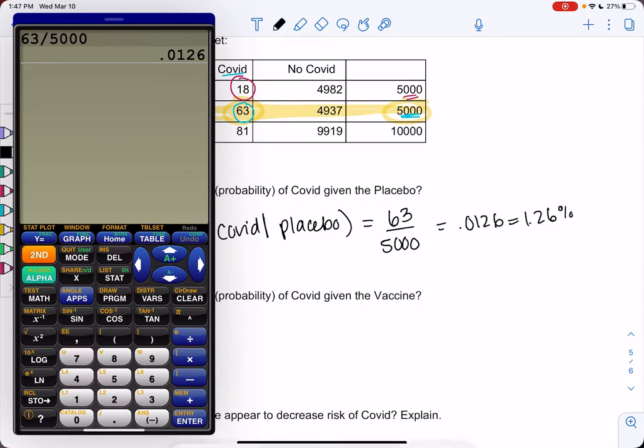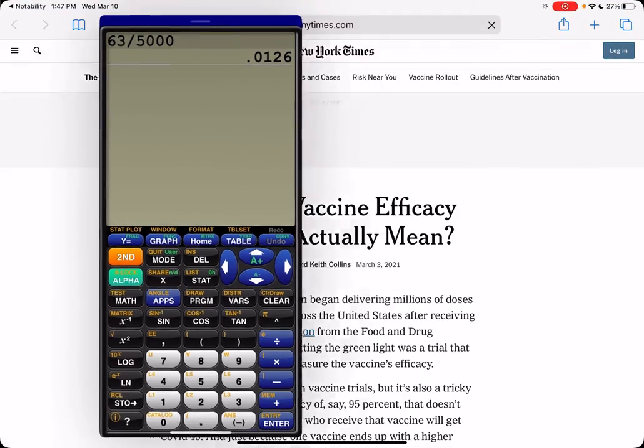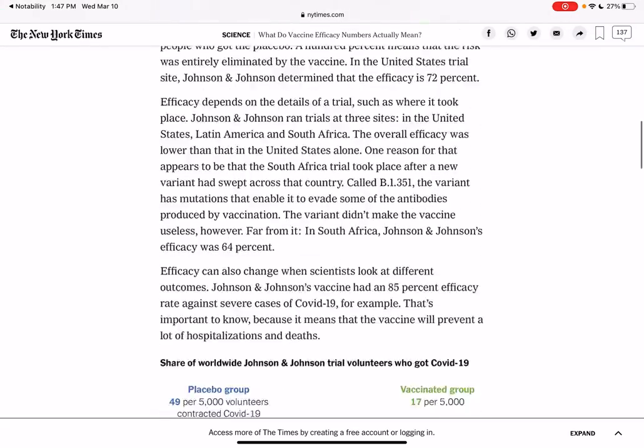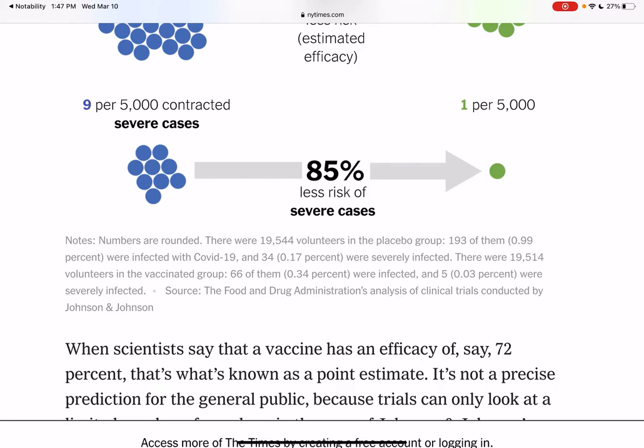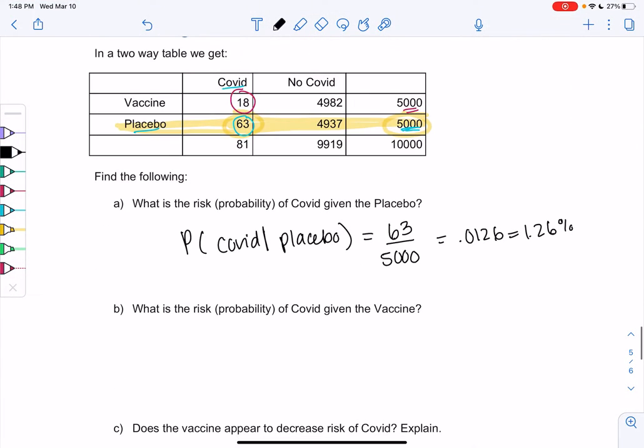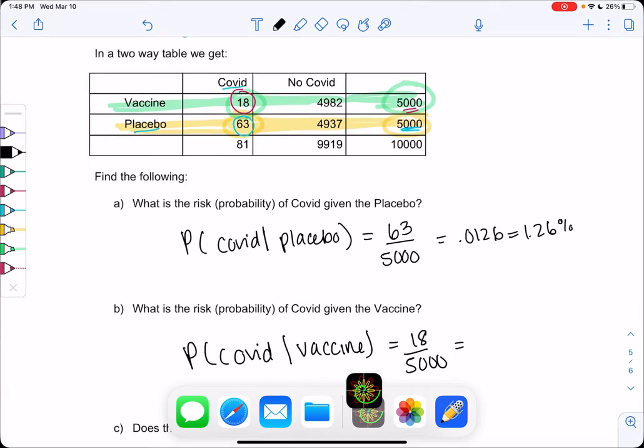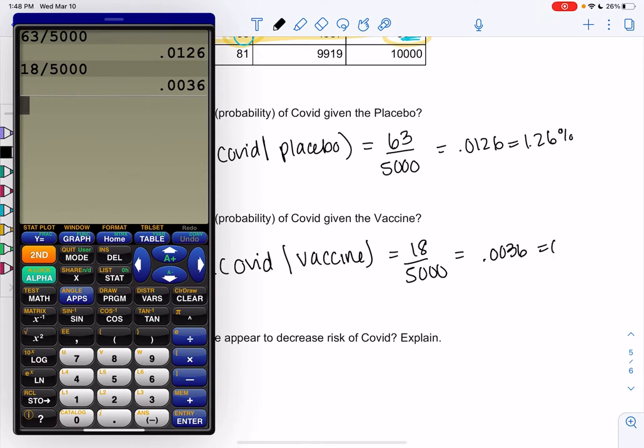This could be mild, this could be severe, this could be hospitalized. You'll notice when you read these articles, they'll have a different efficacy depending on severity. So this is just overall. But if you go deeper into the article, severe cases efficacy changes. So a different amount of people got severe cases. We're just looking at cases overall this time. But that's why there's different efficacies. And so the vaccine group, the probability of COVID in the vaccine group, given the vaccine, same idea, we'll look at everyone with the vaccine and then how many caught COVID. So 18 out of 5,000. And so we get 0.0036, which is less than a percent. It's only 0.36%.